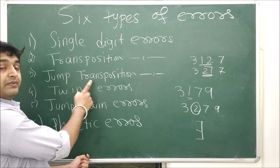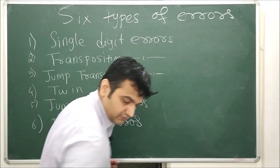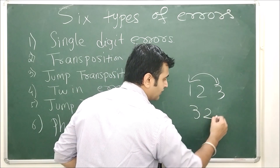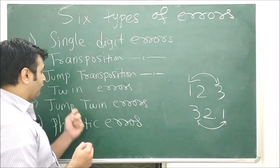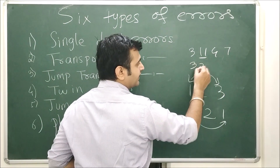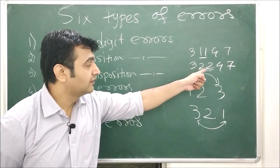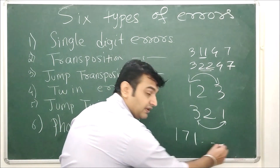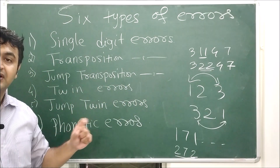The next is jump transposition — there is a jump in between. For example, if the barcode number is 123 but mistakenly it comes out as 321, that is a jump transposition of digits. What are twin errors? Suppose the barcode number is 31147, but instead of 11 it becomes 32247 — those are called twin errors. What are jump twin errors? Suppose the barcode number is 171, but instead it comes out as 272 — there is a jump in between, so it is called a jump twin error.